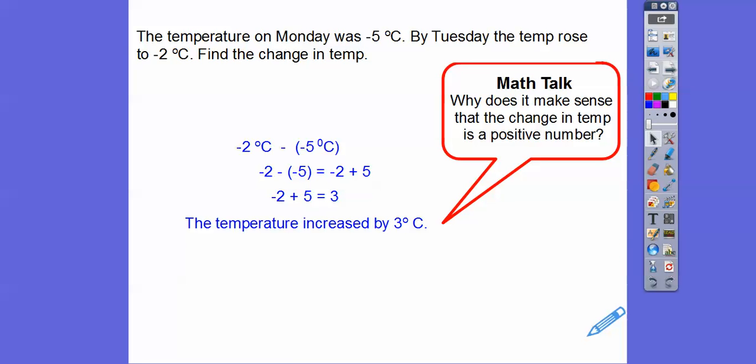Why does it make sense that the change in temperature is a positive number? Because the sign of the answer tells us the temperature increased. The temperature rose from negative 5 degrees to negative 2 degrees — that's still pretty cold, though.